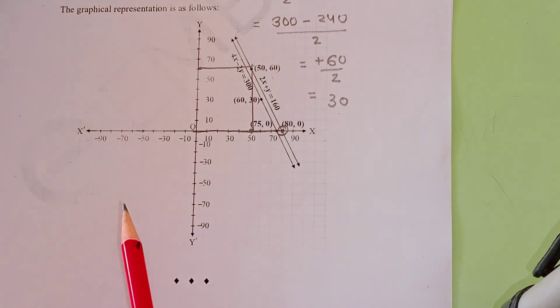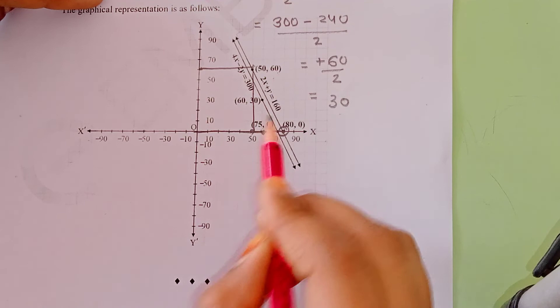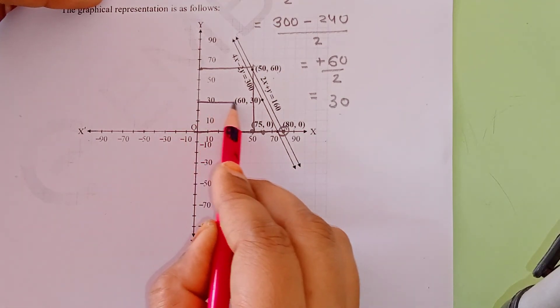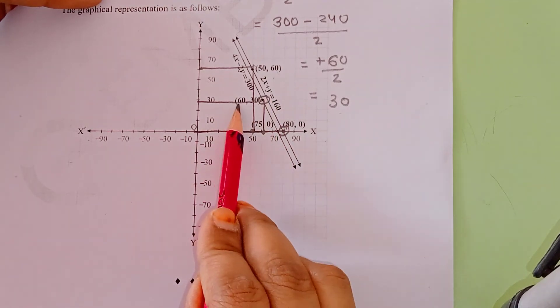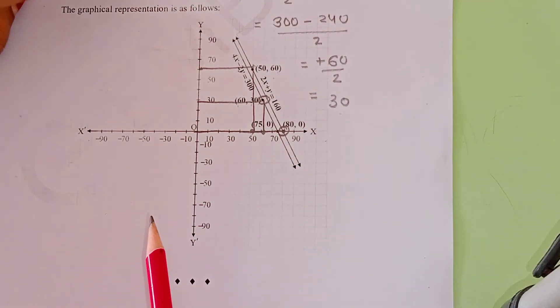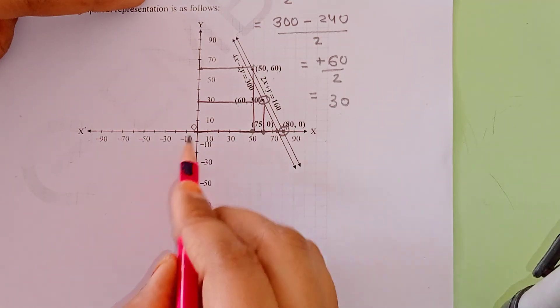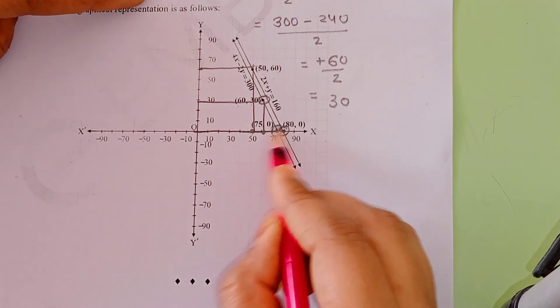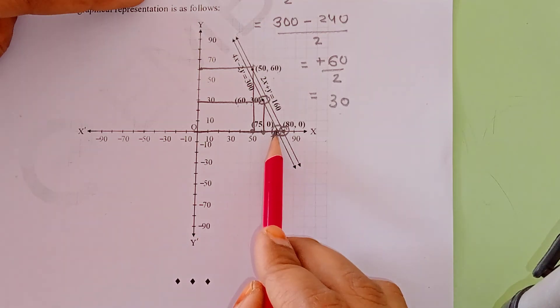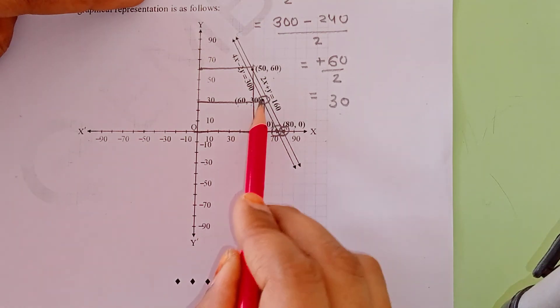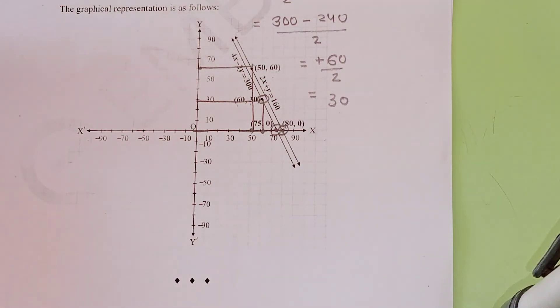For our second graph, the first value is (60, 30) - on the x line at 60 and y line at 30. The next point is (75, 0) - on the x line at 75 and y line at 0. We join these two points with a line. This line is our graphical representation of equation number 2.